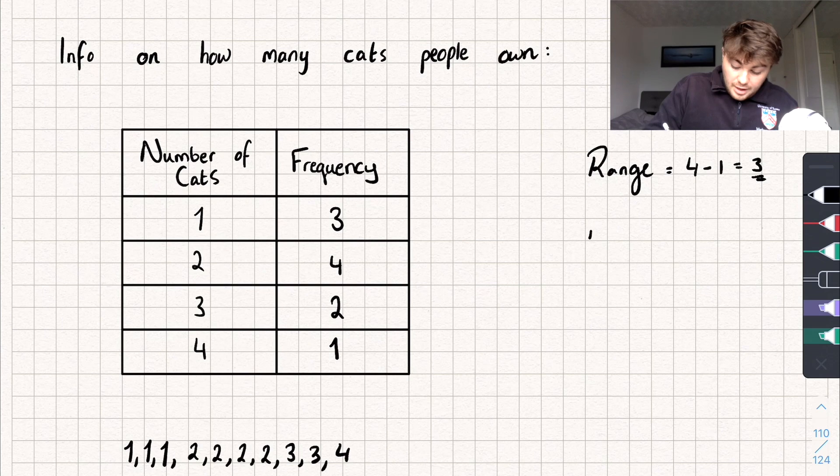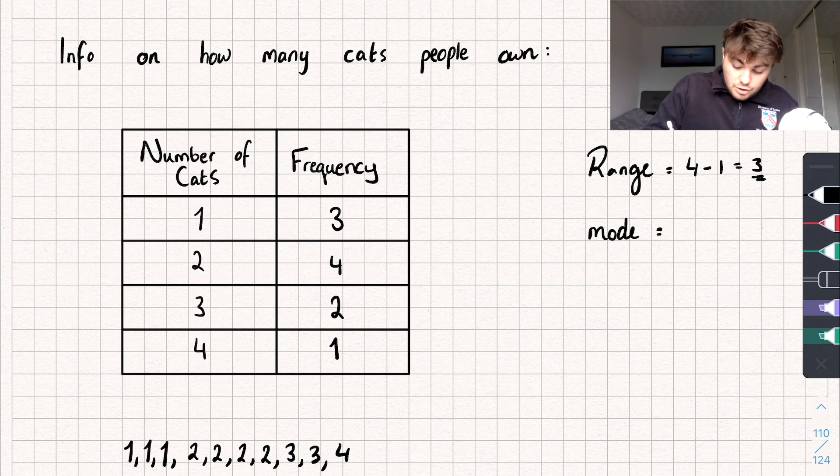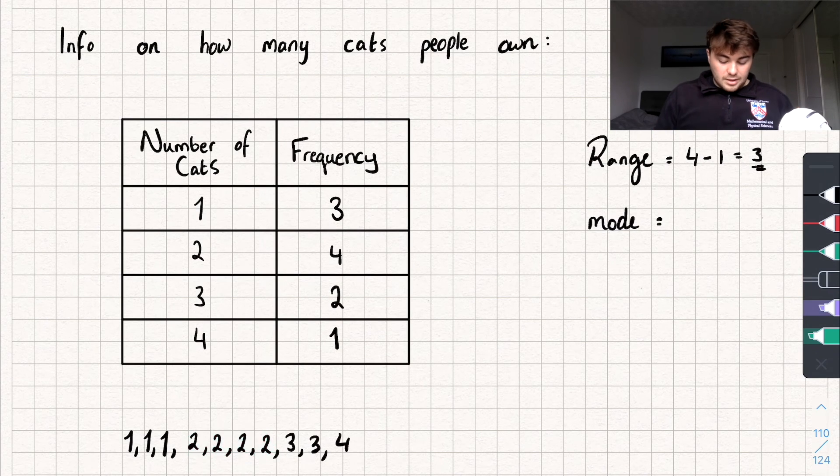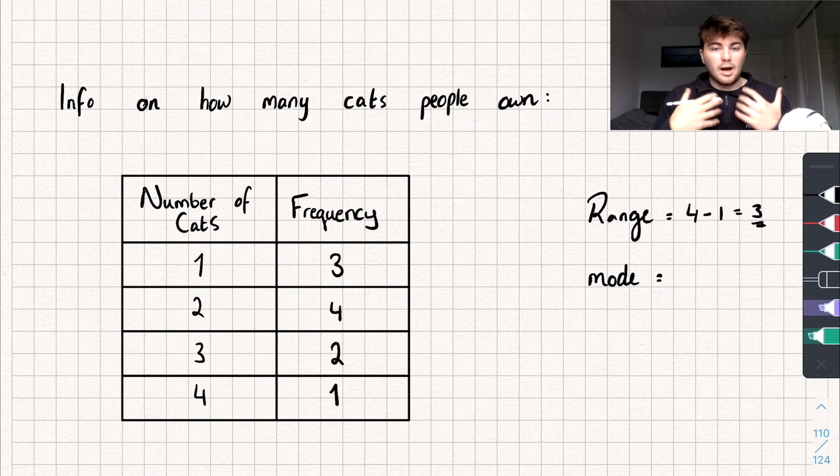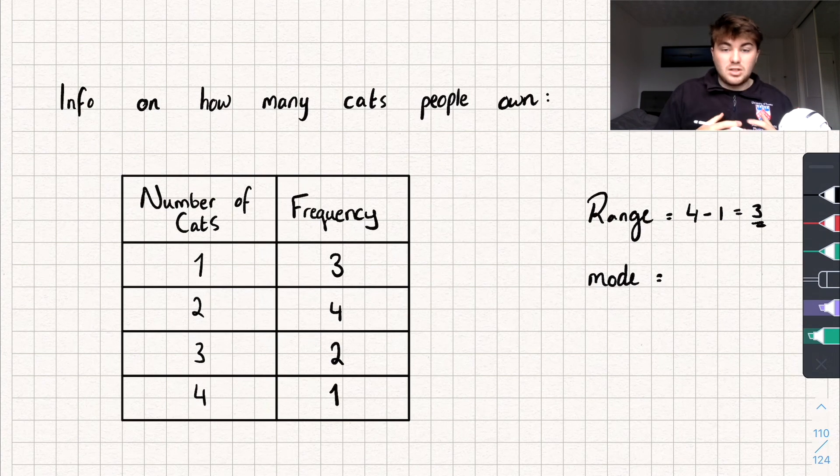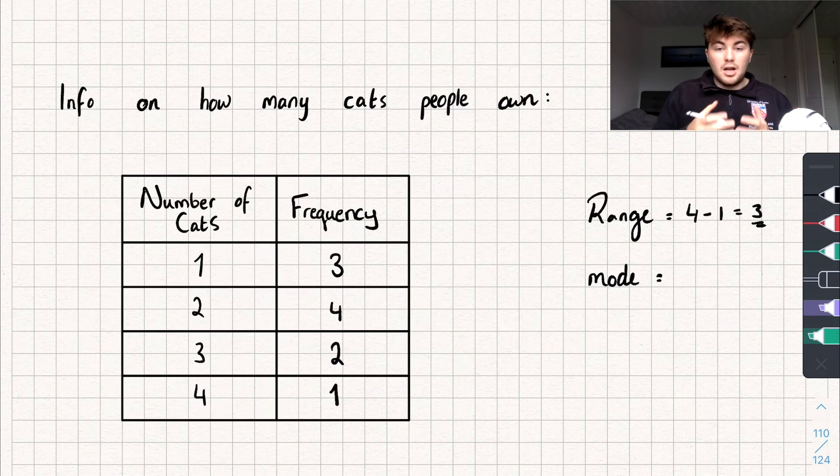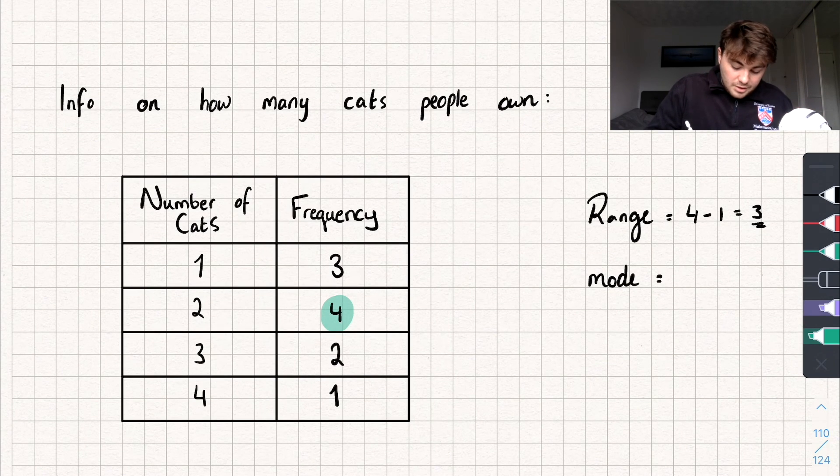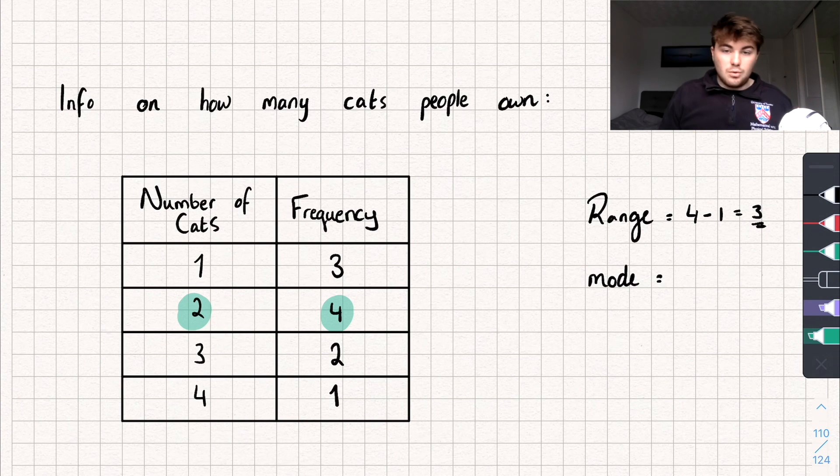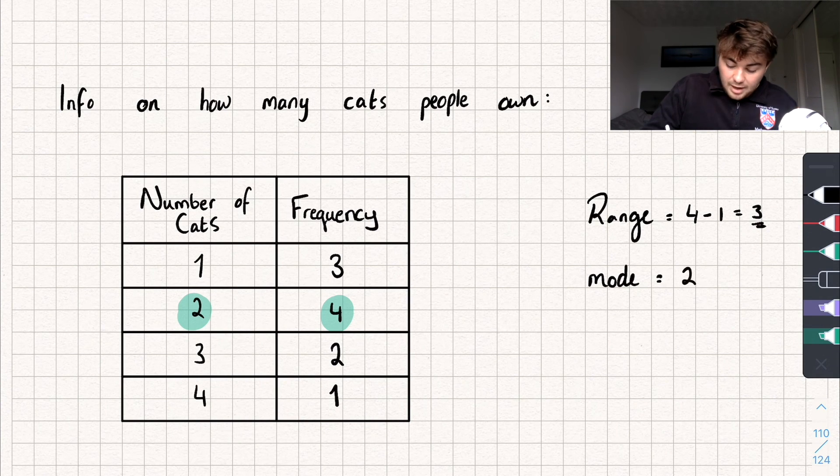So we'll do the mode next. The mode is pretty easy. That's the most common data value. And you can see from this list it's obviously going to be 2. So let's look at the table. How can we see which value appears the most often? Well we want to look for the one with the highest frequency. So that's the one that appears the most, has the highest amount of entries. You can see here the one with the highest frequency is 4, and that relates to 2 cats. So the modal number of cats is going to be 2.